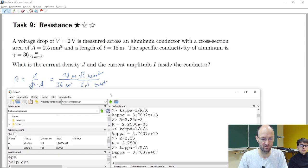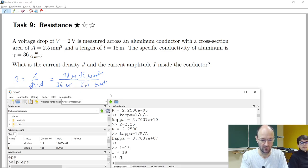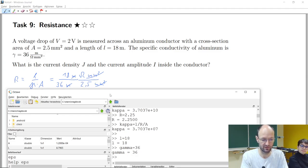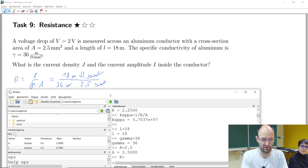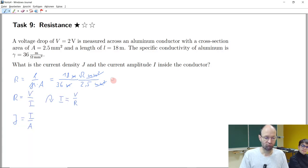And for the number calculation, I'm once again using octave here. So length is 18, gamma in this case is 36. If we stay with the chosen units and the cross-section area is 2.5. And then, so our resistance will be length divided by gamma divided by the area. And it will be 0.20, which sounds reasonable. Cable is not too long, quite large cross-section area.